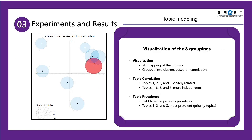The figure is a visualization of the 2D mapping of the 8 topics. They are grouped into clusters based on correlation. As you can see, topics 1, 2, 3, and 8 are closely related. Topics 4, 5, 7, and 6 are more independent of each other. As for topic relevance, the bubble sizes represent prevalence. Topics 1, 2, and 3 are more prevalent, so they are the priority topics.